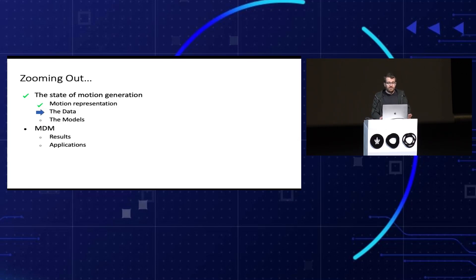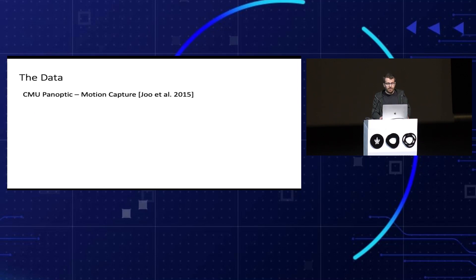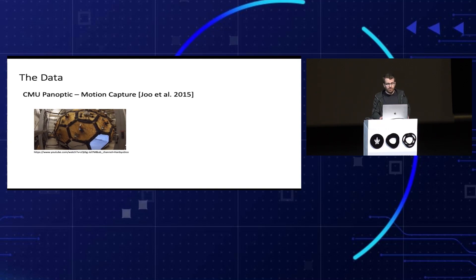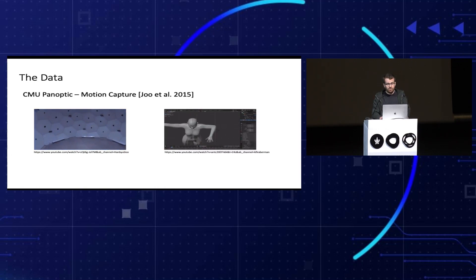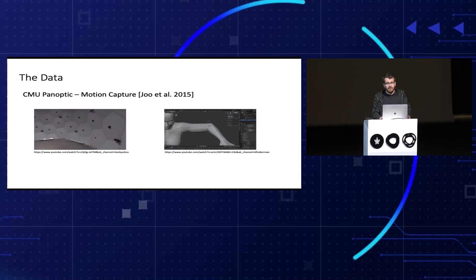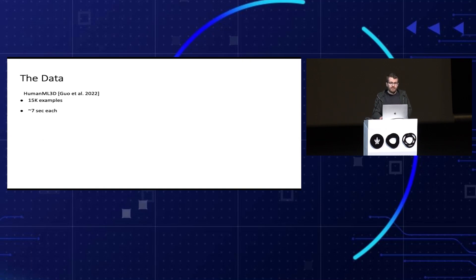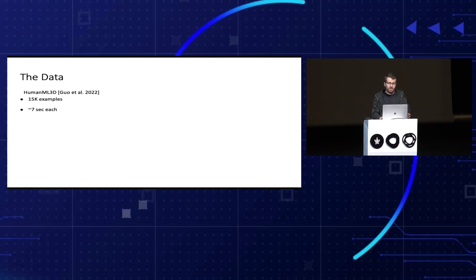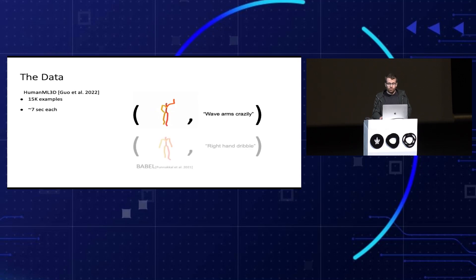We use a simple body model that also gives us the mesh, the skin surrounding the body. To acquire such data, we need either massive hardware, like this motion capture dome by CMU, or a professional animator working extensively to generate animations. Either way, we don't have a lot of data. In our case, we use about 15K examples, each about seven seconds long, annotated with text — pairs of motion and text that describe the motion.